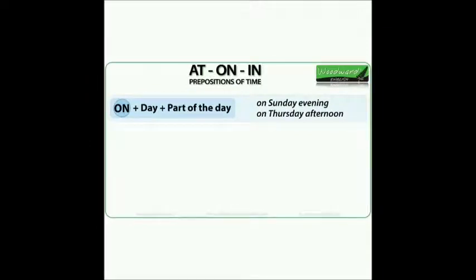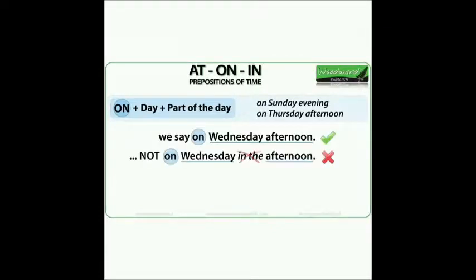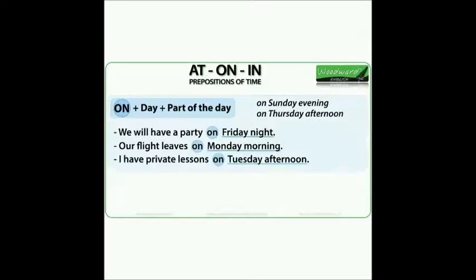When we include a day with a part of the day, we use the preposition 'on' before it: on Sunday evening, on Thursday afternoon. We do not put anything between the day of the week and the part of the day. We say 'on Wednesday afternoon' — we do not say 'Wednesday in the afternoon'. Some example sentences: We will have a party on Friday night. Our flight leaves on Monday morning. I have private lessons on Tuesday afternoon.